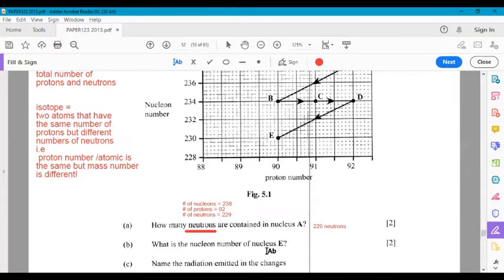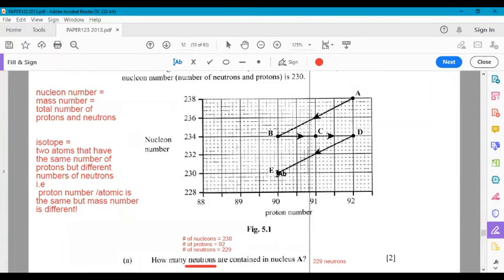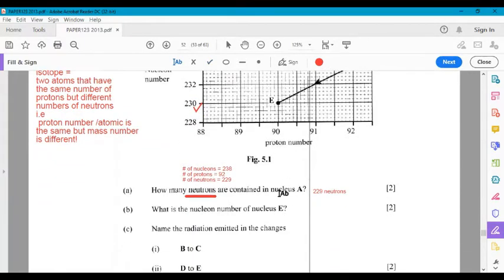So a point for knowing how to identify all of this information, knowing that relationship and for actually doing the calculation. Part B says, what is the nucleon number of nucleus E? So nucleus E is here. And we're going to go over to the y-axis to read off the nucleon number. And that's 230. That means it has a total, all of the protons and neutrons together add up to 230.